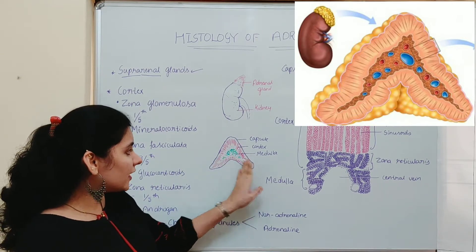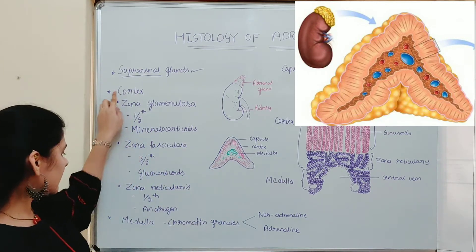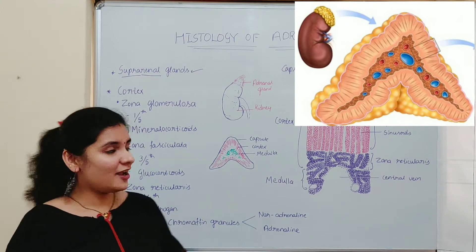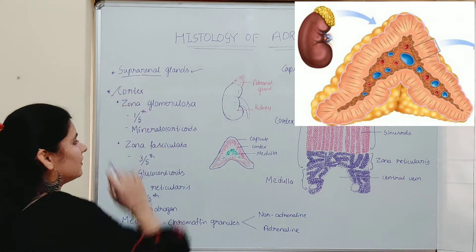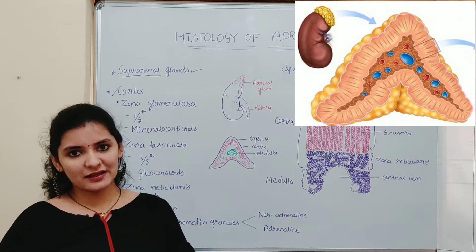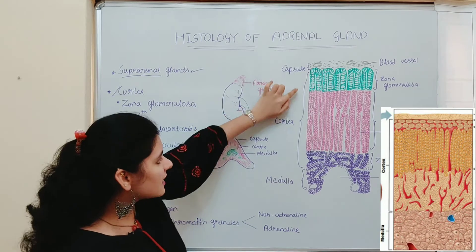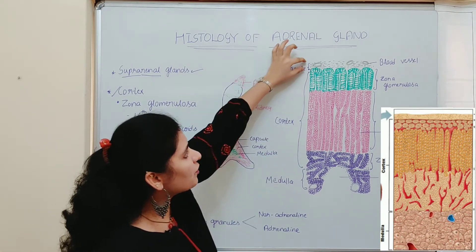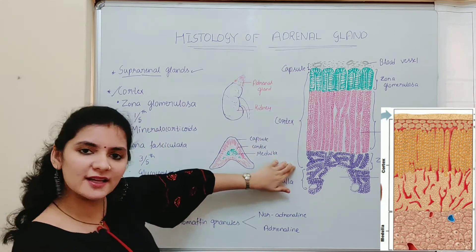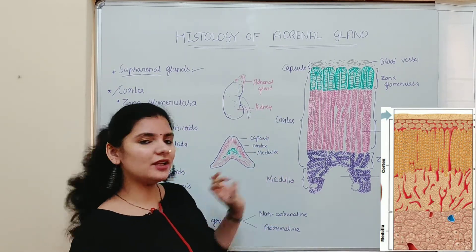The parenchyma of the adrenal gland consists of two parts: the cortex and the medulla. The cortex is the outermost region, present just below the capsule. The volume of the cortex is ten times that of the medulla.